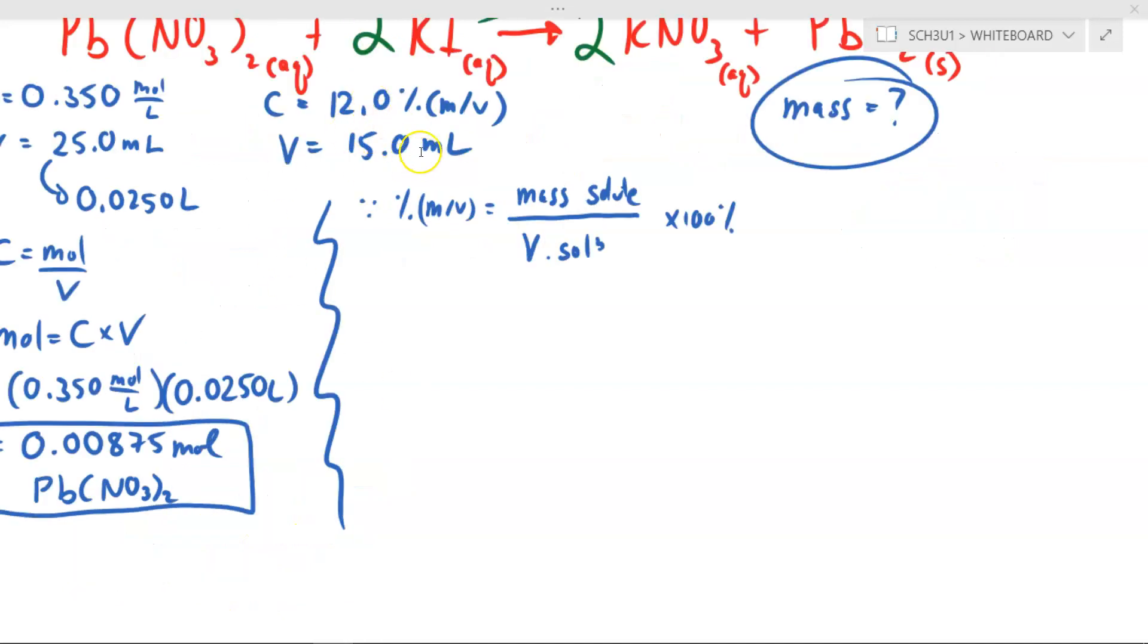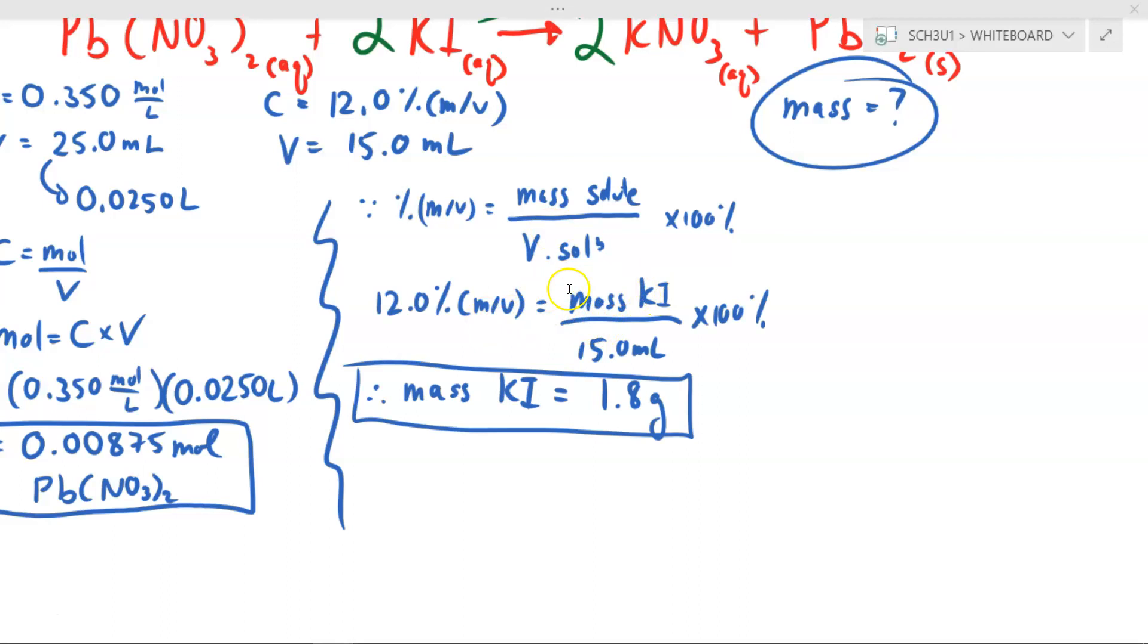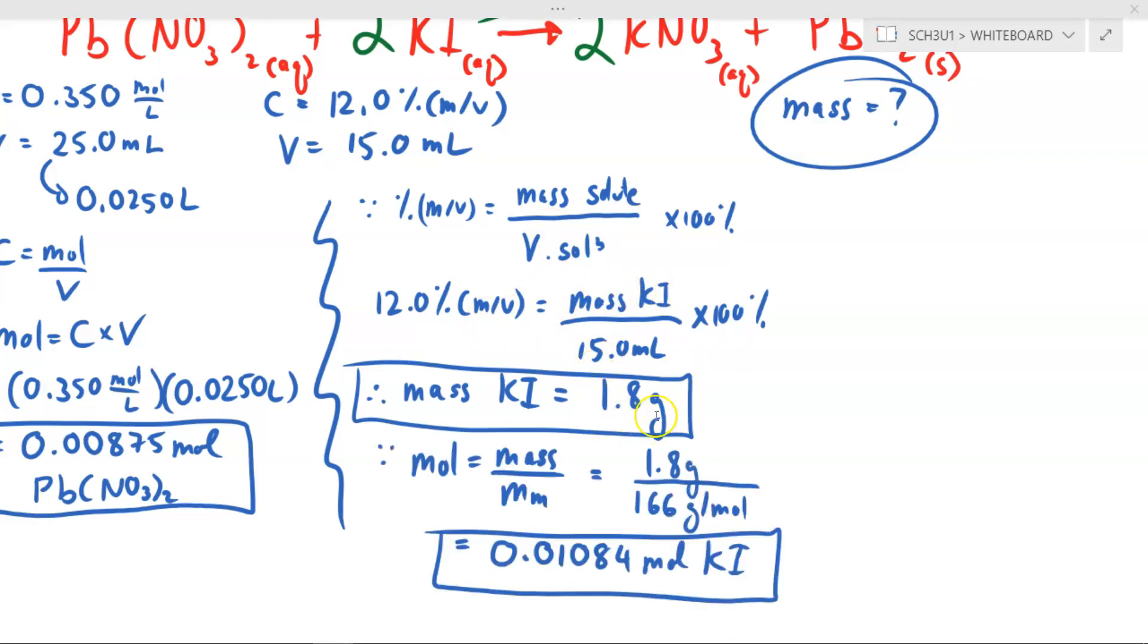Converting to moles on this side is going to take an extra step because we were given percent MV, but we won't have to convert the milliliters to liters because this equation uses milliliters. So plugging in these values we get this equation, allowing us to solve for the mass of potassium iodide, which is 1.8 grams. We can then convert this mass into a mole. Mole is equal to mass divided by molar mass, 1.8 grams divided by the molar mass of KI, 166 grams per mole. We find this from the periodic table. And we get 0.01084 moles of potassium iodide.